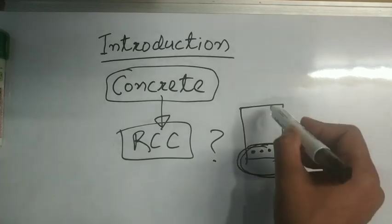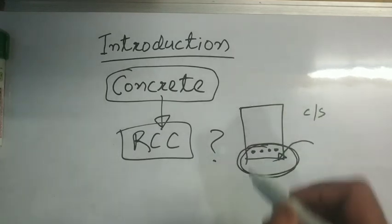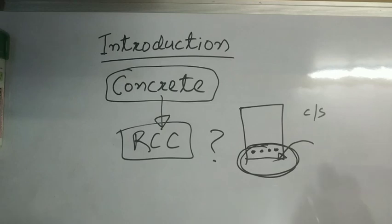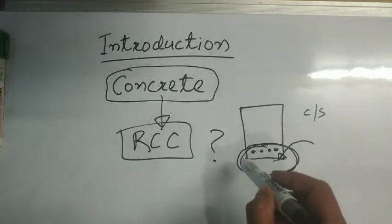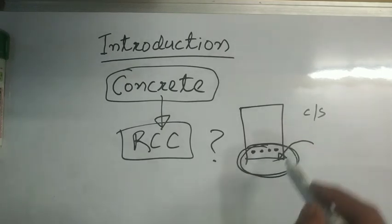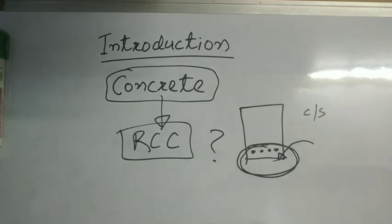For example, this is a cross section of a simple rectangular beam. So to increase its tensile strength, we provide reinforcing bars in tension zone. So that was the need for introduction of reinforced cement concrete.